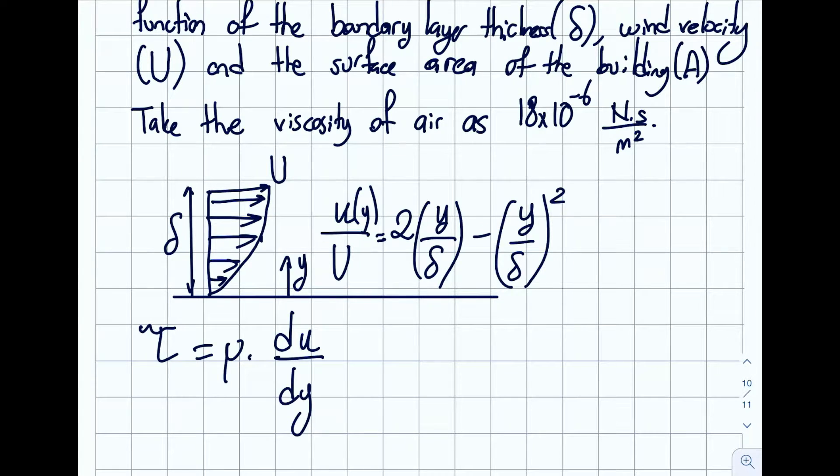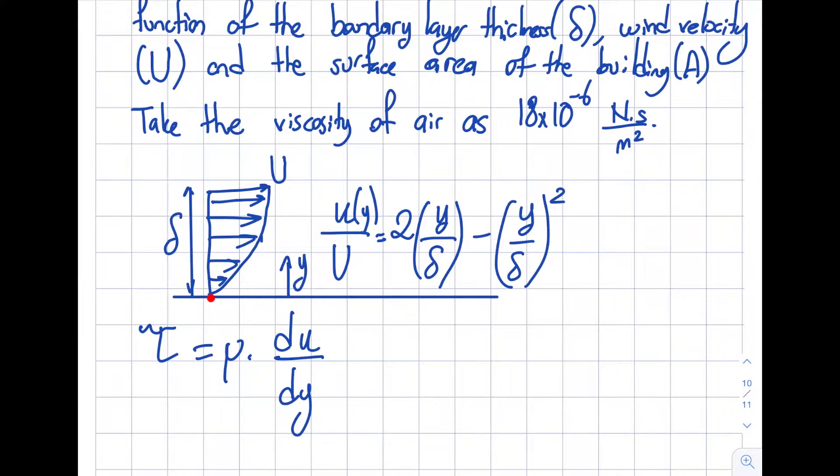This is due to the no-slip condition. Where the wind is touching the top of the building, the velocity will be zero, yet at some distance it will be capital U. The thickness where it reaches from zero to 99% of capital U will be called the boundary layer thickness delta.